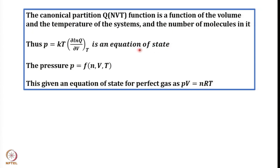We can call this an equation of state. When we talk about ideal gases or perfect gases, the ideal gas law — PV = nRT — is an equation of state for a perfect gas. So we can call an equation of state as an equation which connects P, V, and T. The simplest case is PV = nRT, but remember that this is only for an ideal gas.